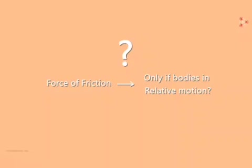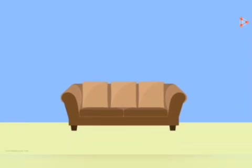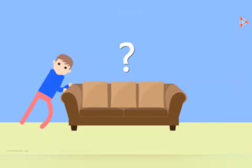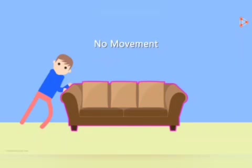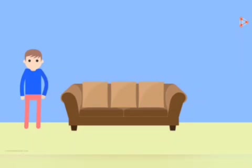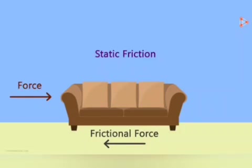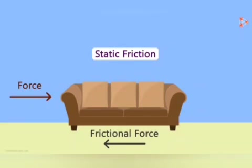Does the force of friction come into play only when two things are in relative motion? Let's say you want to move a stationary, heavy sofa in your living room. What happens when you give it an initial push? Nothing happens — the sofa doesn't move even though you're applying a lot of force. The answer is static friction. The force you apply is balanced by a frictional force from the floor acting in the direction opposite to your push.